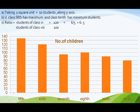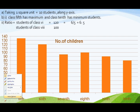Part a: How would you choose a scale? So what we have taken is that 1 square unit is equal to 10 students along the y-axis. Part b: Which class has maximum number of children? Looking at the bar graph, the 5th class has maximum children — iska graph sabse uccha gaya hai.